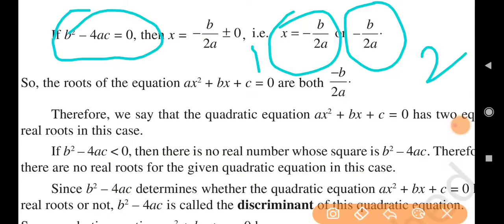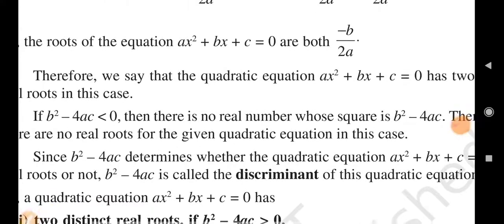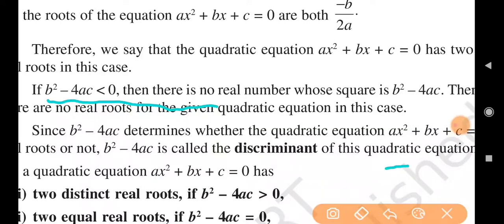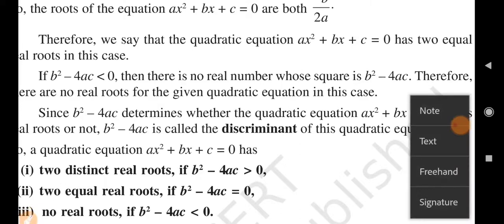That is the second condition. The third condition: if b square minus 4ac is less than 0, there is no real number whose square equals b square minus 4ac. So the quadratic equation ax square plus bx plus c equals 0 will have no real roots.